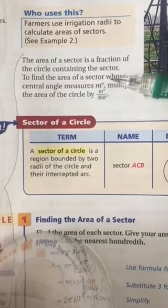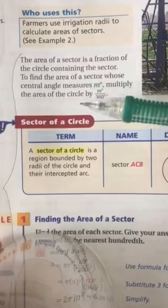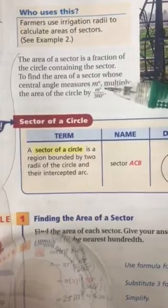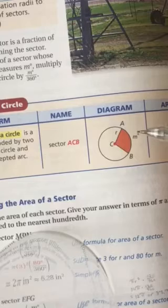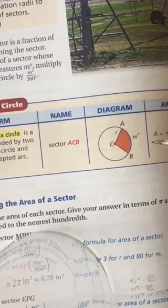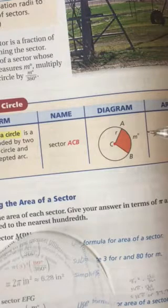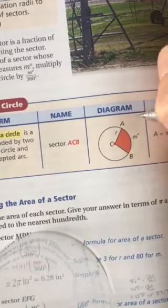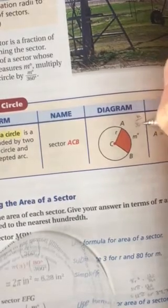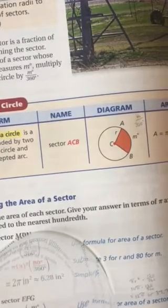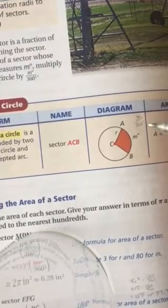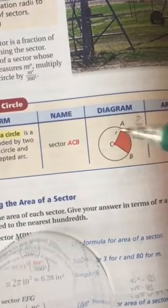To find the area of a sector whose central angle measures m degrees, multiply the area of the circle times m degrees over 360 degrees. Okay, now let's talk about that. We see that the measure of this sector or this central angle or arc are m degrees. So to find out what part of the circle that is, we would make a fraction m over 360. That's like saying one-half or one-third, but it's m 360ths.